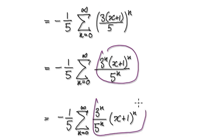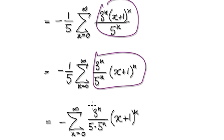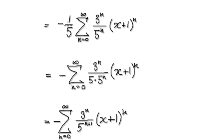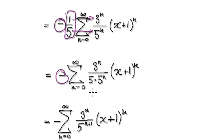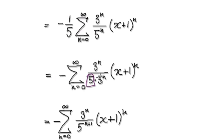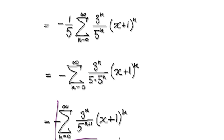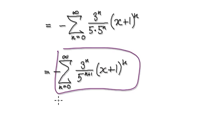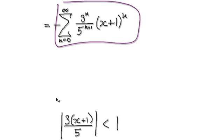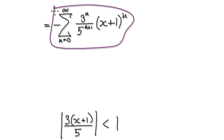Now just break this apart — that will then give you this. Push the 1/5 into here, but leave the minus on the outside. That will then give you this. Same base, so it becomes 5 to the power of n plus 1. That will then take you to here. This is your final series.